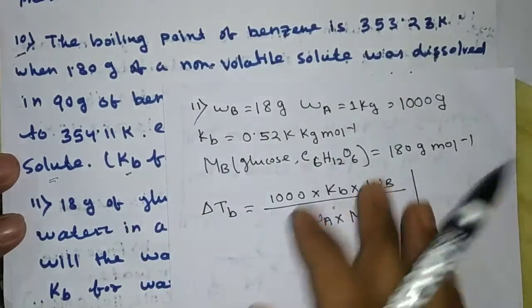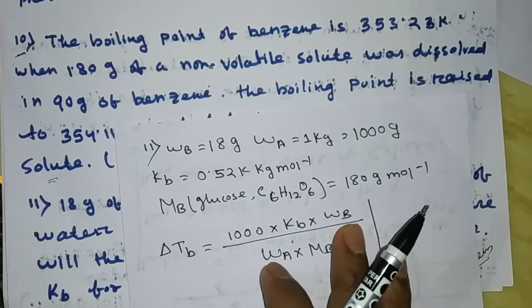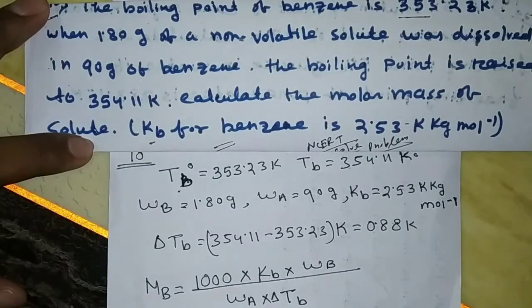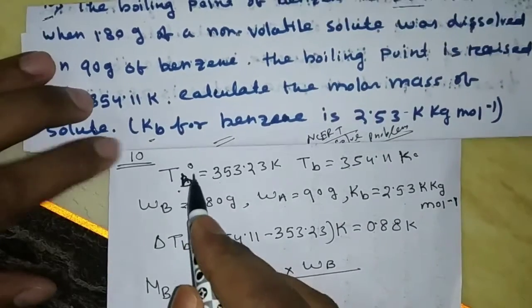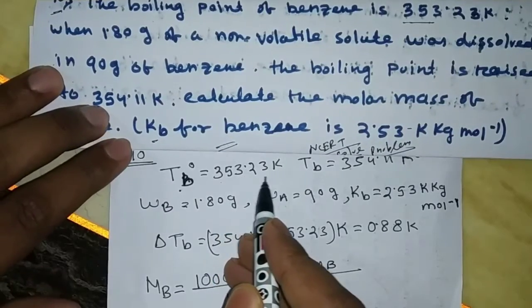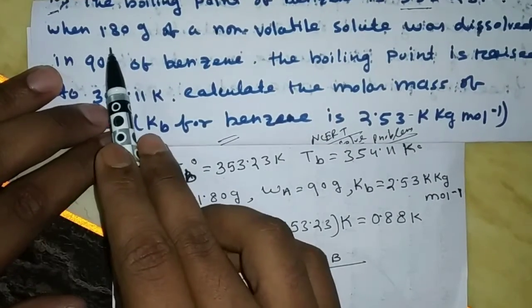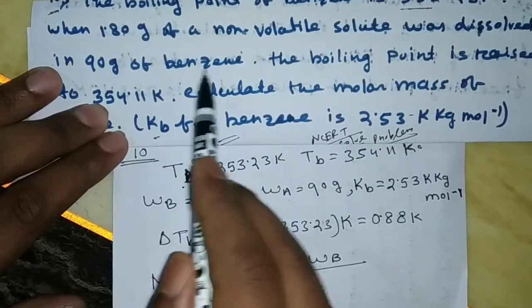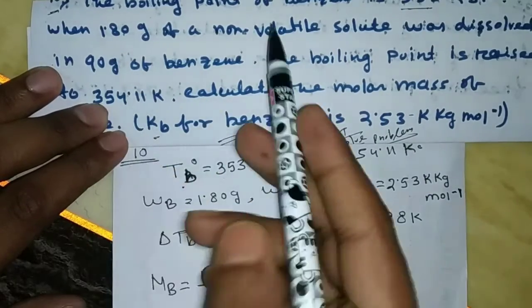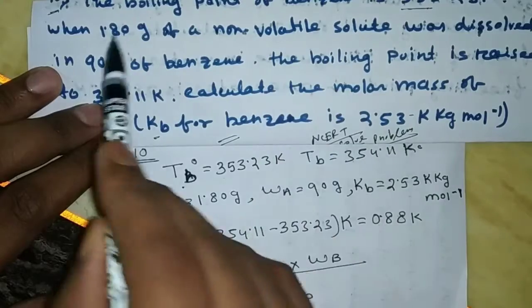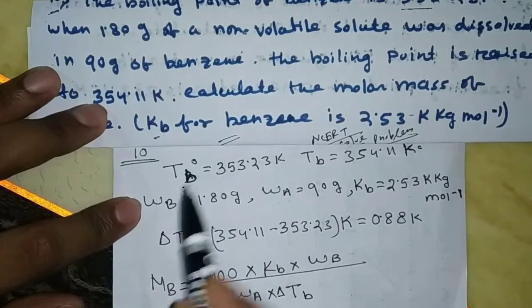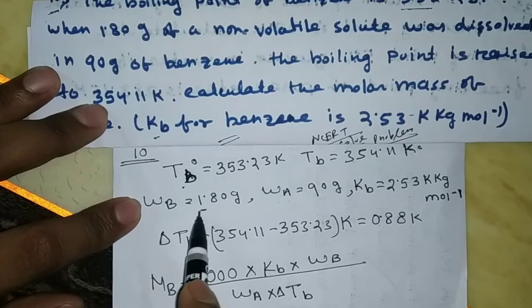Benzene is the solvent. The boiling point of pure benzene, Tb-not, is 353.23 Kelvin. The mass of the non-volatile solute, WB, is equal to 1.80 grams. The mass of the solvent benzene, WA, is equal to 90 grams.